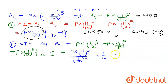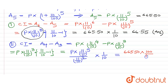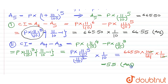We can write P × (11/10)^3 as P × (11/10)^5 divided by (11/10)^2, multiplied by 1/10. Since P × (11/10)^5 equals 665.50 and (11/10)^2 equals 121/100, this becomes 665.50 × (100/121) × (1/10). The 10 cancels and we get the answer as 55. So this is the solution to the second part.